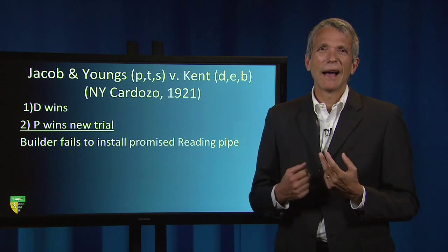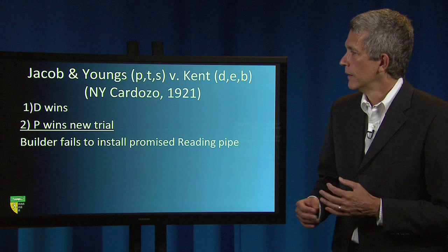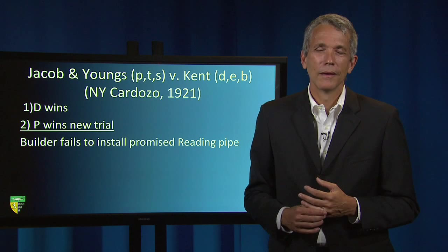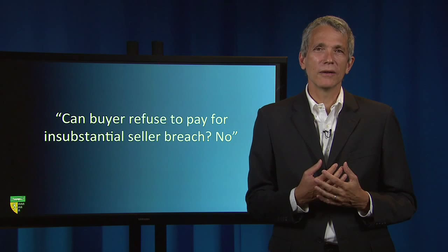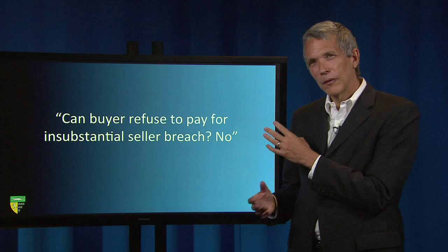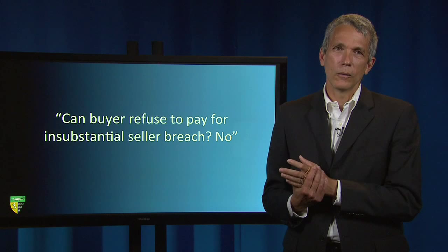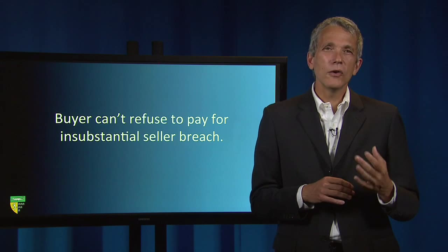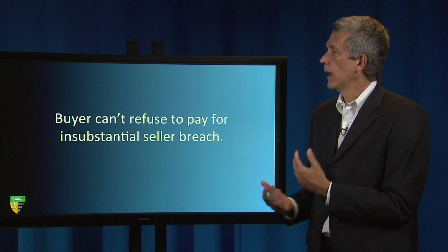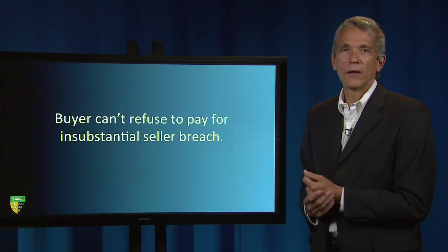Third, try to summarize the facts of the case in a single declarative sentence. Here: 'the builder fails to install promised Redding pipe.' Fourth, summarize the central legal conclusion. Some people prefer a question-and-answer format — 'Can the buyer refuse to pay for insubstantial seller breach? No.' — but I prefer to state the issue as a conclusion. These conclusions are the rules you take from the case. For example, I would write: 'buyer can't refuse to pay for insubstantial seller breach.'